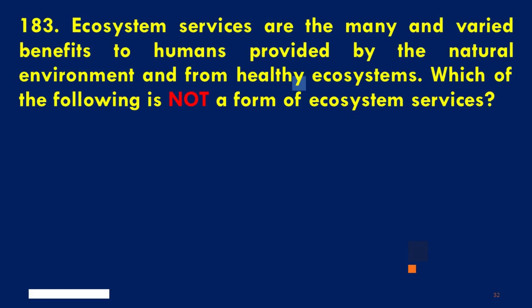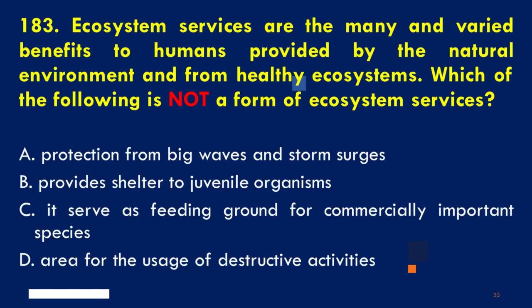Ecosystem services are the many and varied benefits to humans provided by the natural environment and from healthy ecosystems. Which of the following is not a form of ecosystem service? A. Protection from big waves and storm surges, B. Provides shelter to juvenile organisms, C. Serves as feeding ground for commercially important species, D. Area for the usage of destructive activities. The correct answer is D. Area for the usage of destructive activities.